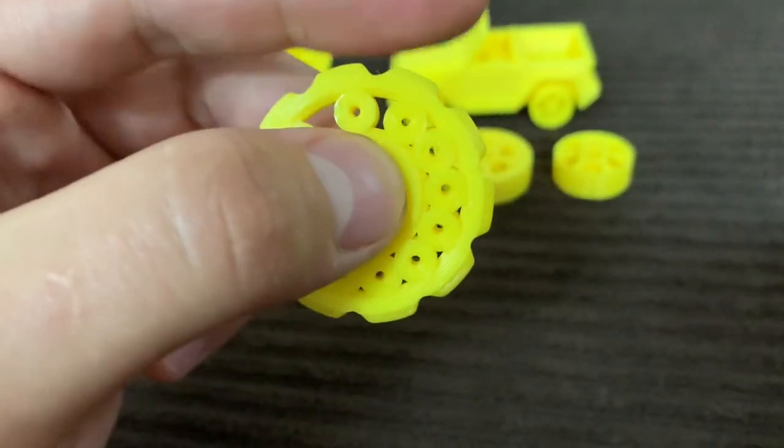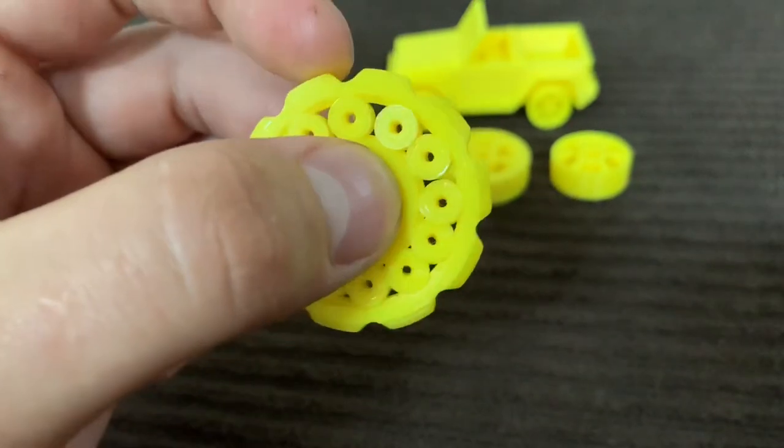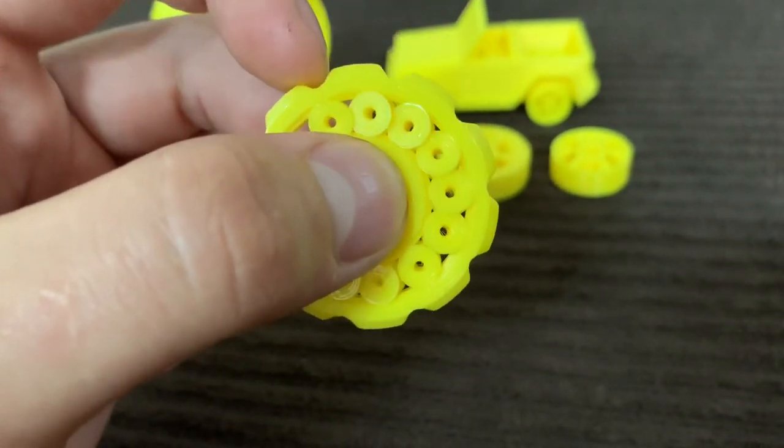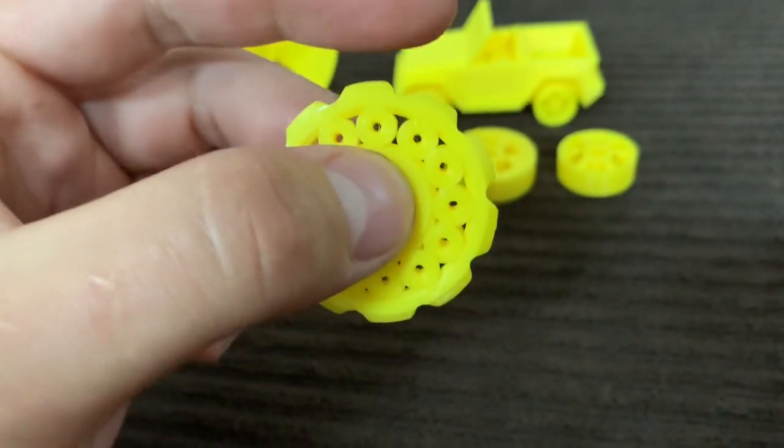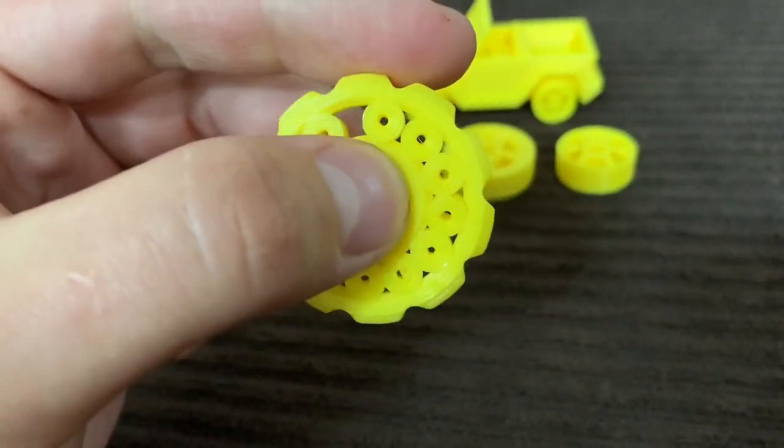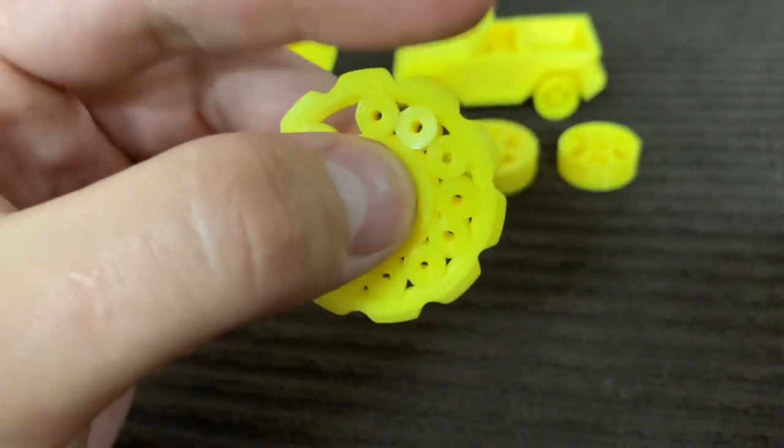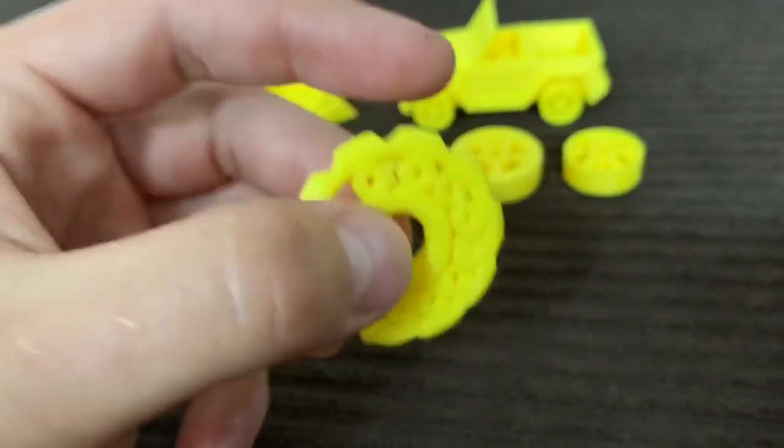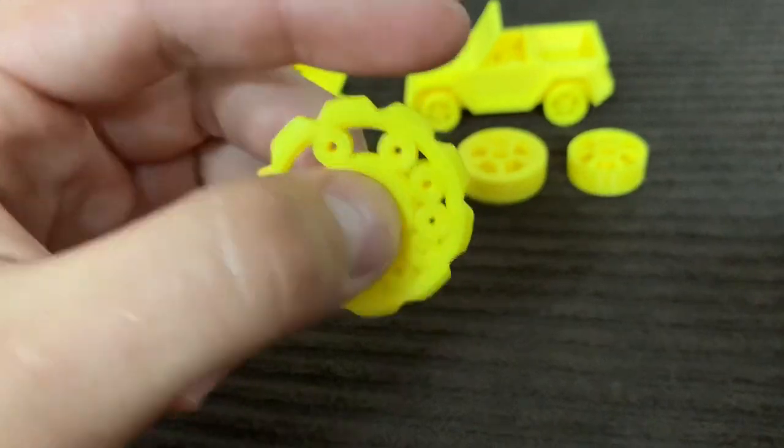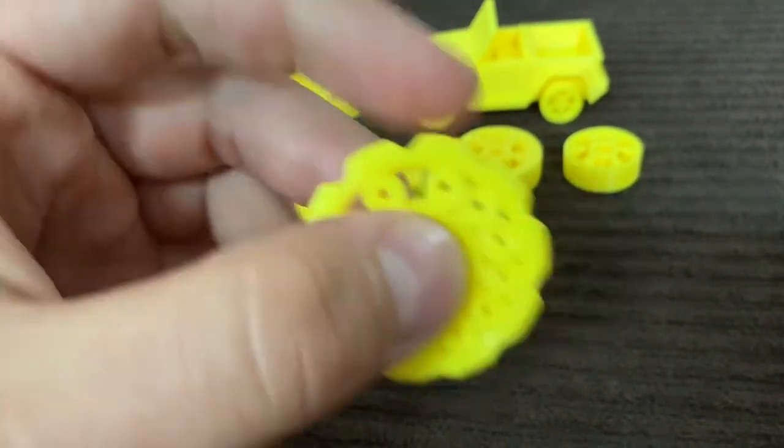Also another tip: if you have a bearing and maybe the tolerances aren't perfect and it spins kind of lousy, and you can hear like there's a little spot over there like speed bumps, heat it up and then spin it a couple times while it's still warm, a little roughly, and it will loosen up because it will melt into place where it needs to be. So that's just the tips for 3D printed bearings.